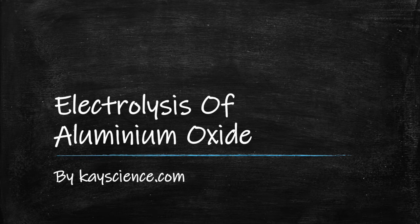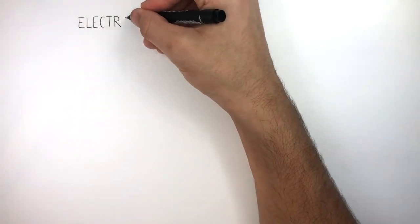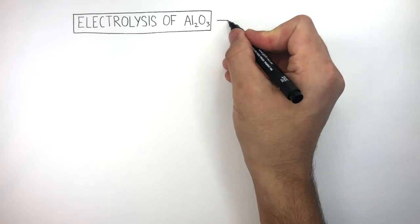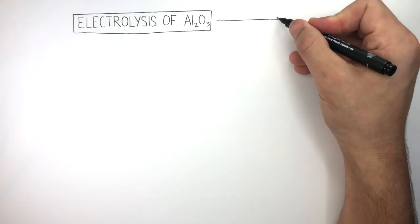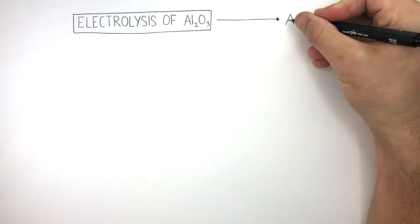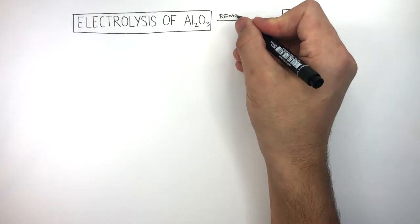Electrolysis of Aluminium Oxide by kscience.com. The electrolysis of Aluminium Oxide uses electricity to break down the compound into Aluminium as it removes the oxygen.